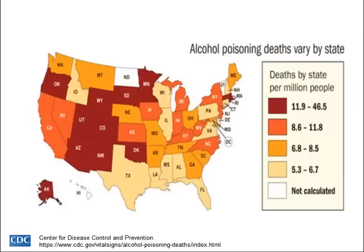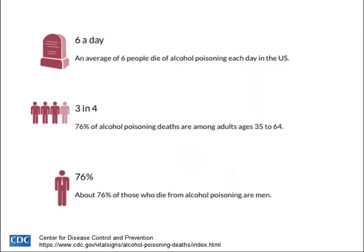Moving to alcohol — I pulled a lot of data from the CDC to show how significant this problem is. Alcohol poisoning deaths are notably higher in the Midwest and West Coast. On average, six people a day die from alcohol poisoning in the US. Three quarters of those are between 35 and 64 years of age, and three quarters of those are men. So your key demographic is young to middle-aged men.